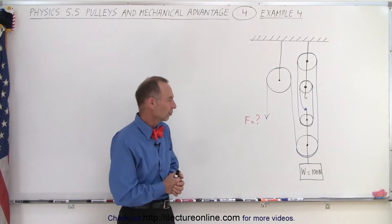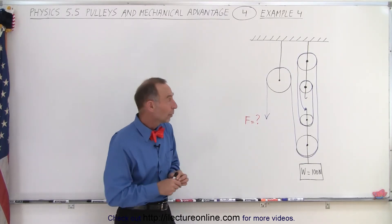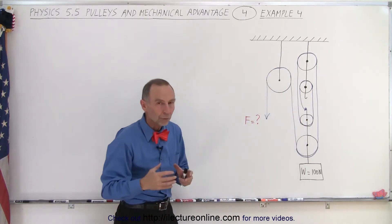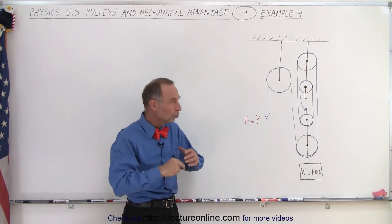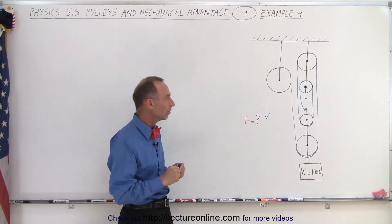All right, so how do you figure this out? Well first of all we have to assume that none of the pulleys have mass or friction, so there's no forces necessary to make the pulleys turn around. So this is an ideal situation.